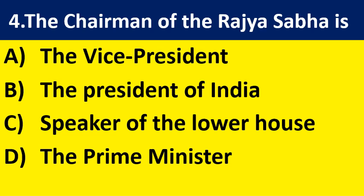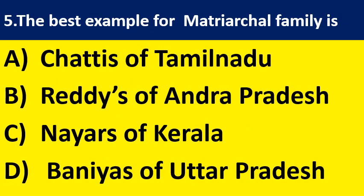Question 4: the chairman of Rajya Sabha is — option A: the vice president; option B: the president of India; option C: the speaker of the lower house; option D: the prime minister.